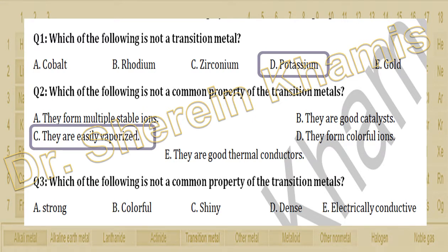Transition metals are very heavy metals and they give different oxidation states or multiple stable ions. They are also strong catalysts — we use them as catalysts like nickel and iron. They have different colorful compounds and each one gives different colors. They are also thermal conductors. The property that is NOT theirs is 'easily vaporized' — they are very strong metals requiring up to 3000 degrees to melt.